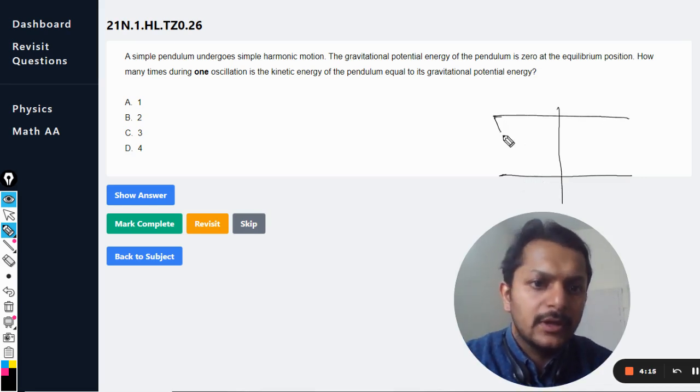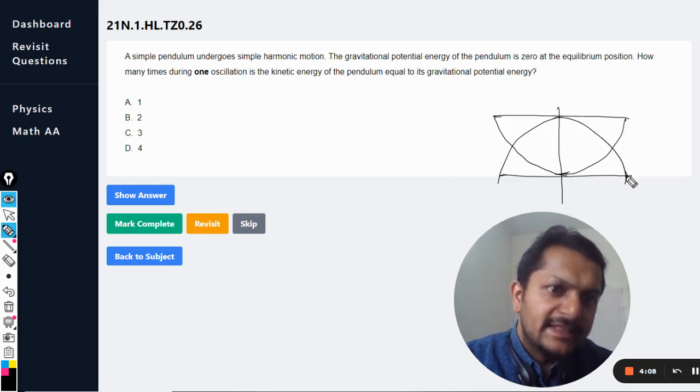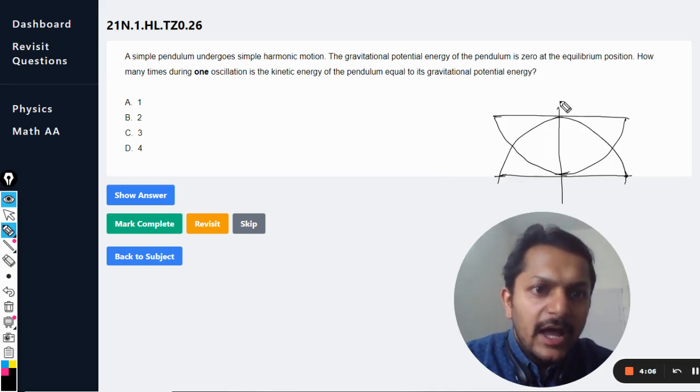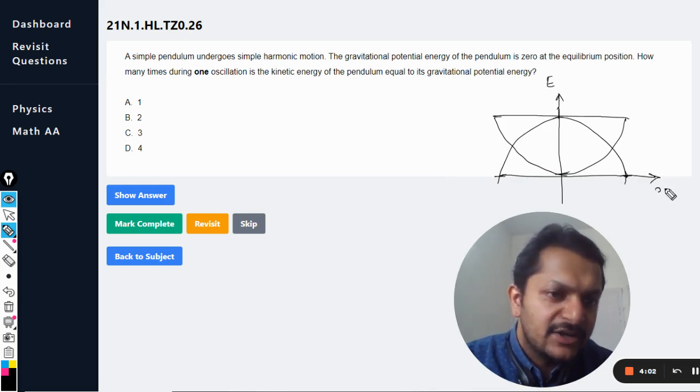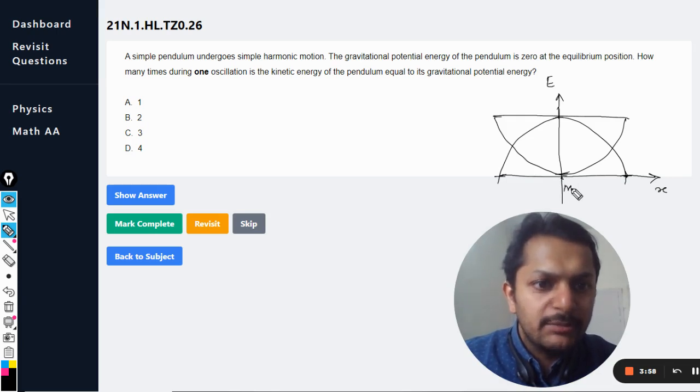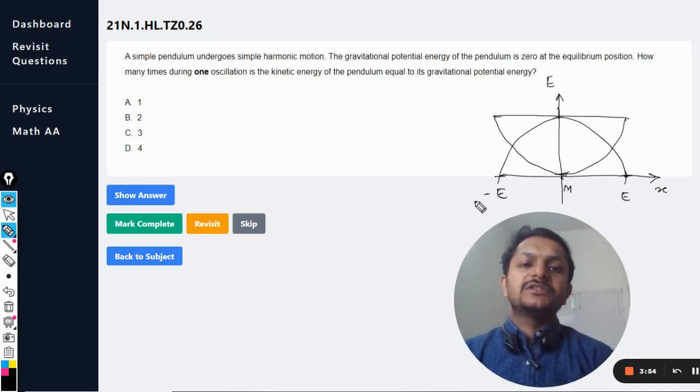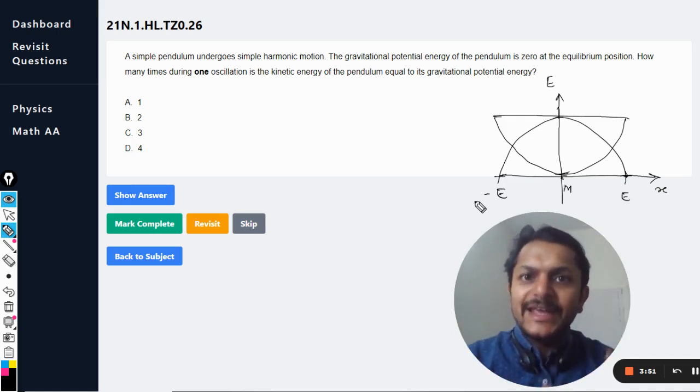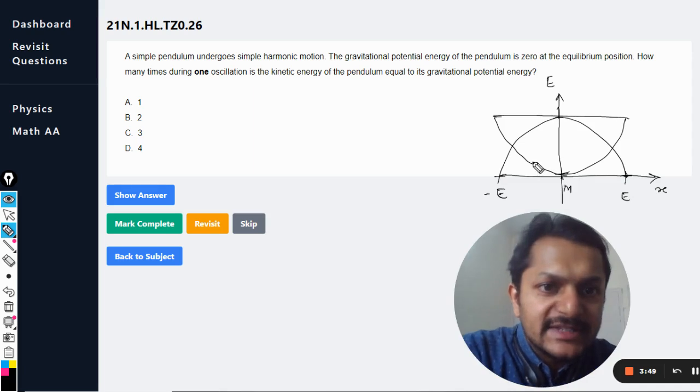The drawing will not be that perfect, but it is somewhat like this. This is the magnitude of energy and this is the magnitude of the displacement from the mean position. This point is the mean position, this point is extreme position, this is the other extreme position. So this is how the graph was looking like.